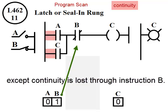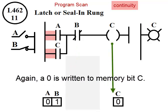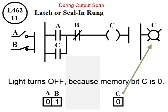Not that it matters. Again, a 0 is written to memory bit C. Light turns off because memory bit C is 0.